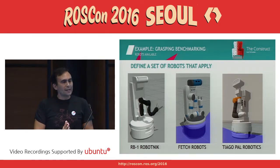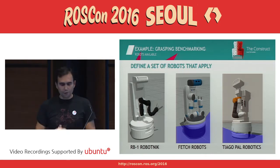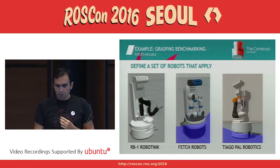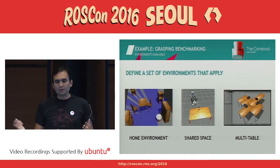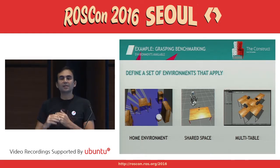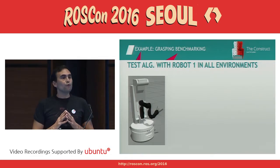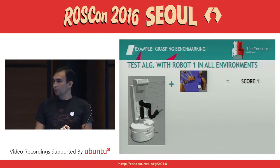The next thing is to define a set of robots that apply to this interface. In this case we have selected three different robots: one from Robotnik, one from Fetch, and one from PAL. Then we define the set of environments that apply to this problem — three different environments. We test the algorithm on the first robot in each environment and obtain a score. Testing the Robotnik robot with the first environment gives one score, the second environment gives a second score, and the third environment gives a third score.